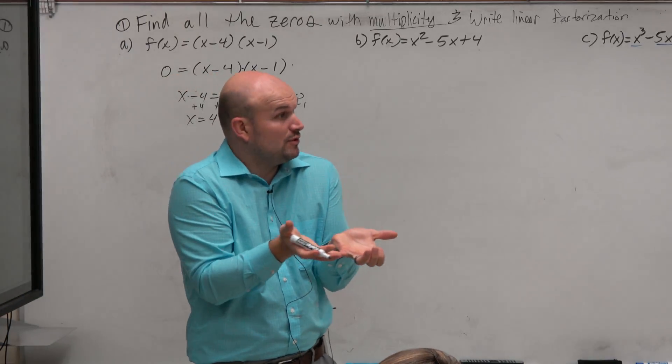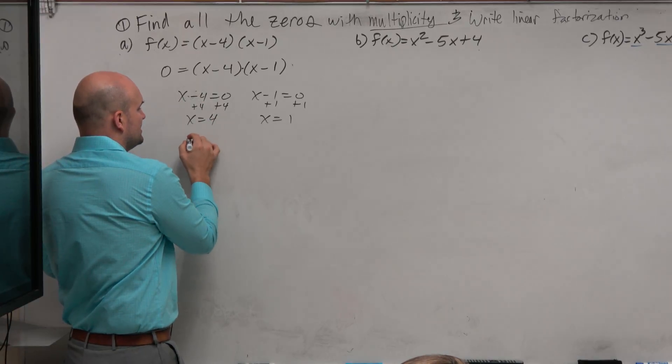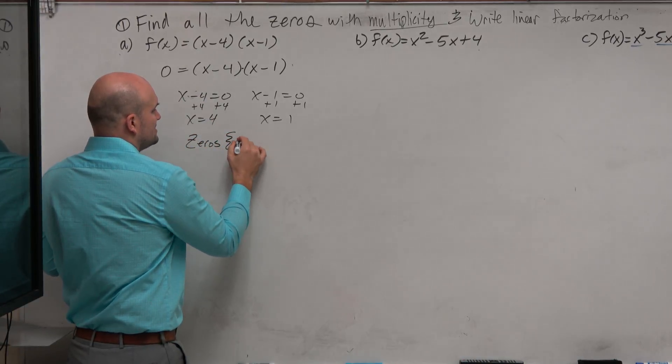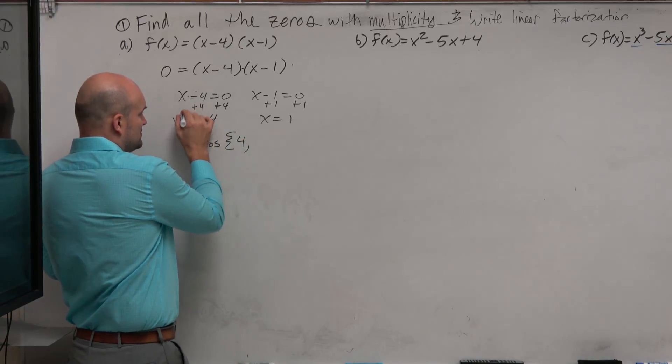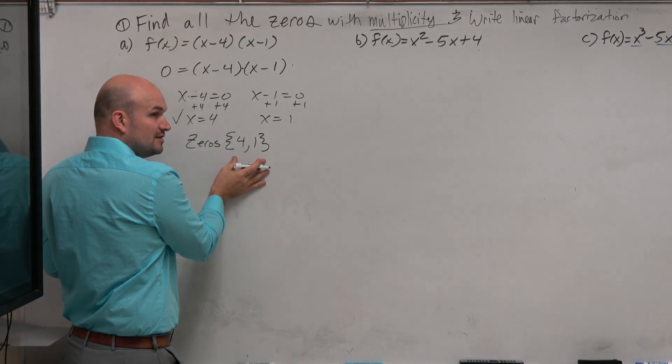Those are the values that make that equation true for this multiplied equal 0. So we can just write the zeros in set notation. This is perfectly fine as well, but a lot of times, you will see on your test, they'll be written in set notation.